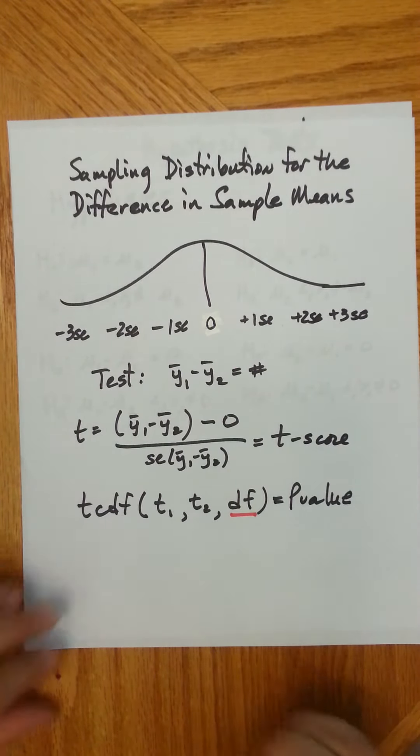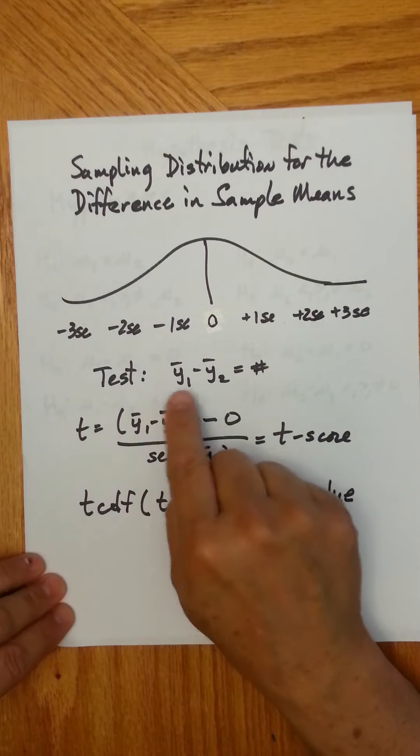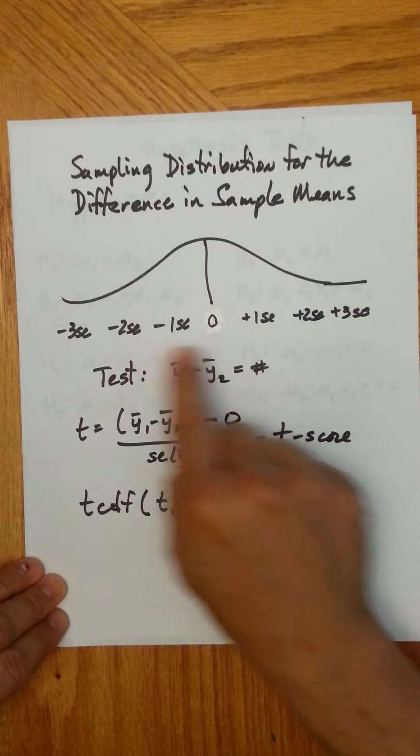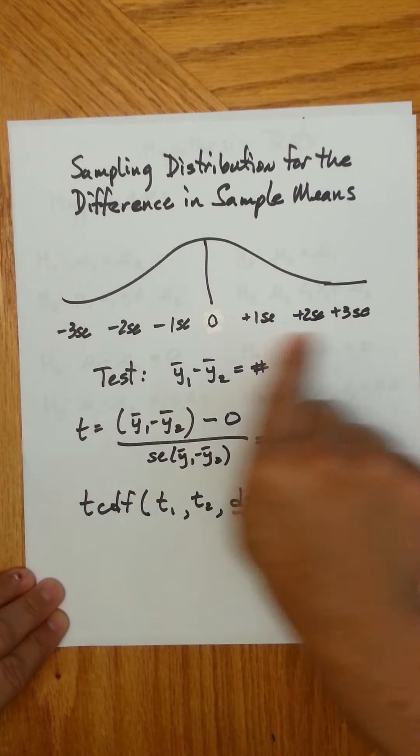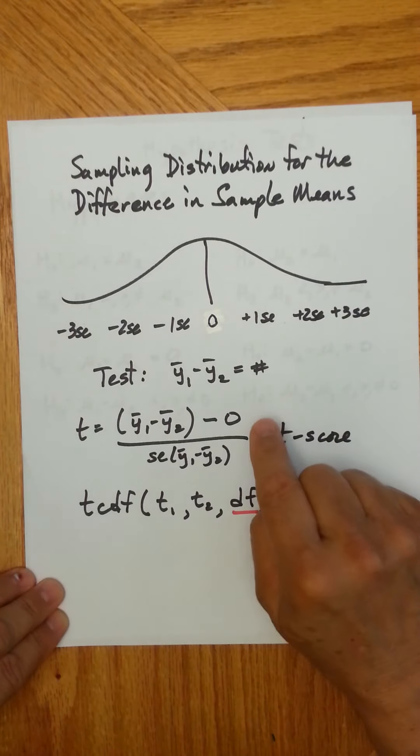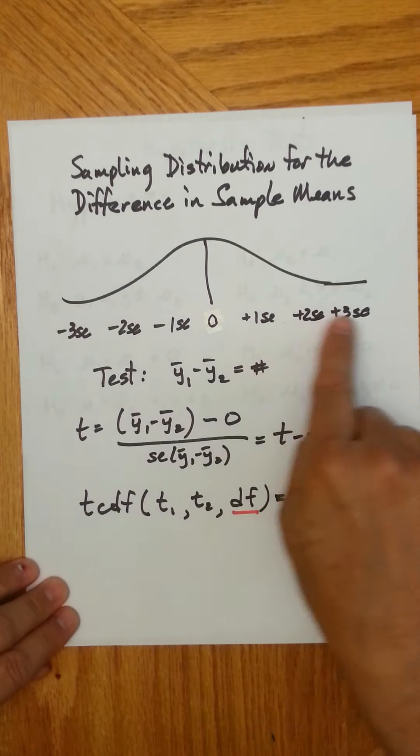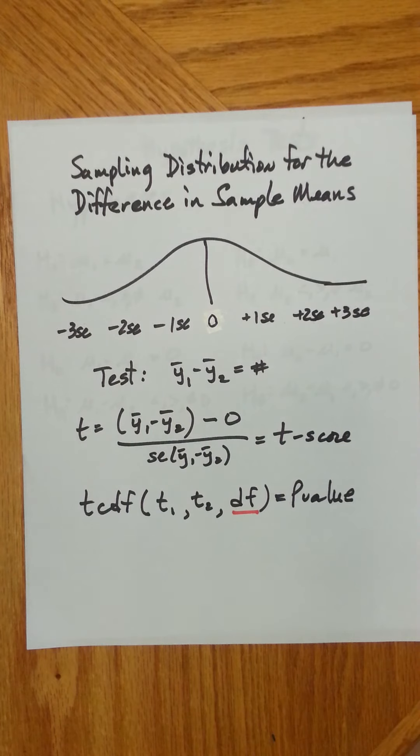Then, you go to test it. When you actually go into the real world and take two samples, find the average for the two samples, and then subtract them, you're going to get some number, and you want to know, where's this number? Where does it fall on this distribution? If it's close to zero, then your null could be true. If it's very far from zero, then you're probably going to reject your null.